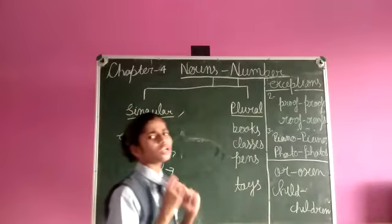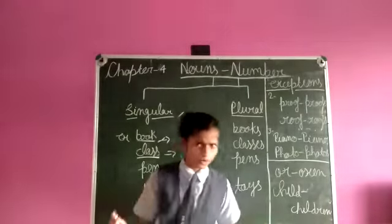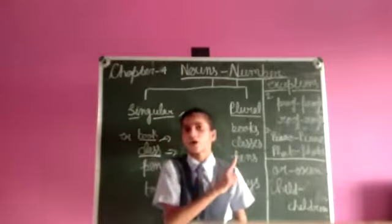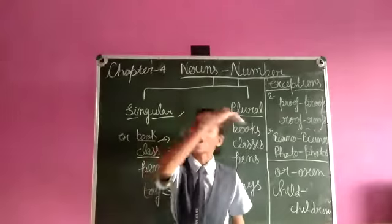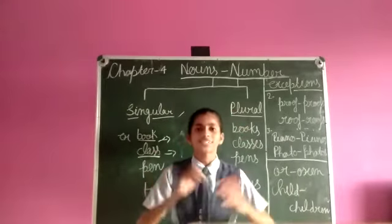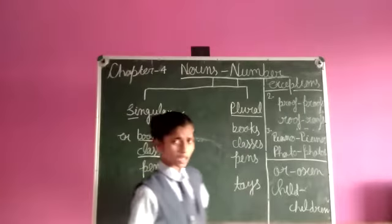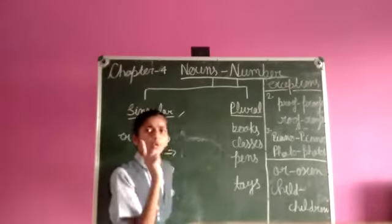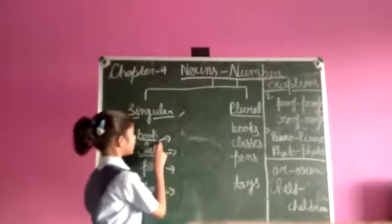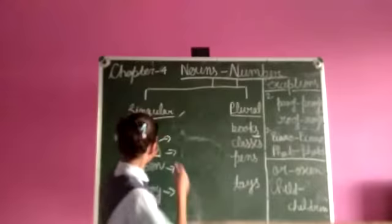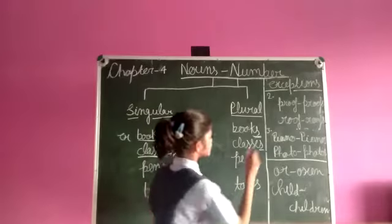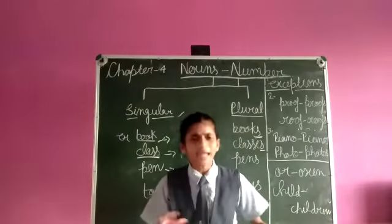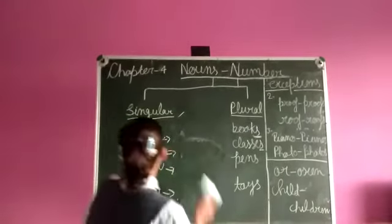What is the difference between plural and singular number? Singular number tells about one person or thing, and plural number tells about more than one person or thing. To convert singular into plural, we use S, ES, VES, and many things. By some rules, let's learn about it.